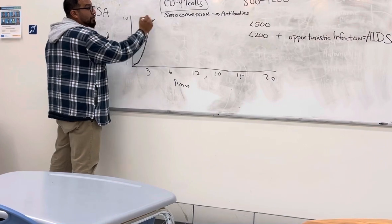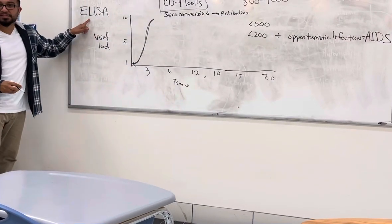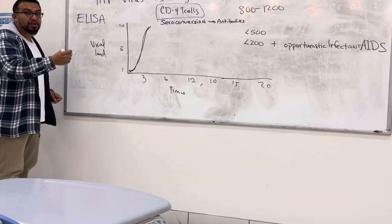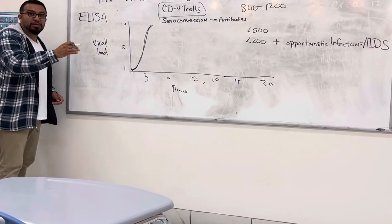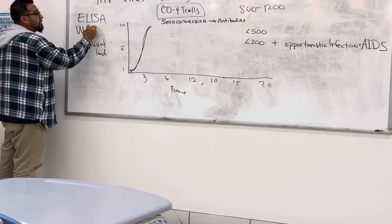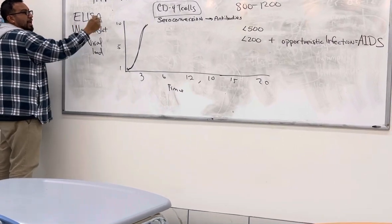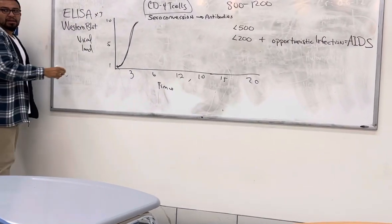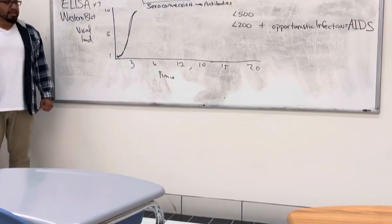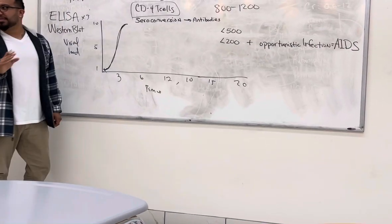So the viral load goes up, you seroconvert, now you have the antibodies. Now when you do your ELISA test, which should be done three times, and come back positive three times, now we know that you might be ready for the next step, which is a Western blot test. You do the ELISA test three times, Western blot, if it comes back positive, all those, now you have HIV. And that's when the whole viral load goes up, seroconversion. Does that make sense?